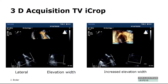Another thing you can do is use iCrop — I don't know what it's called in GE. You have the 3D with two simultaneous 2D images. You define where you look at the tricuspid — you have the lateral width and the elevation width. You can see in this image that lateral width is fine, but elevation is not fine, so you hardly see the whole tricuspid. Then you can increase the elevation width and then you have the tricuspid valve as well.